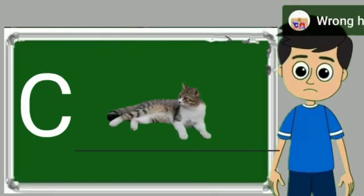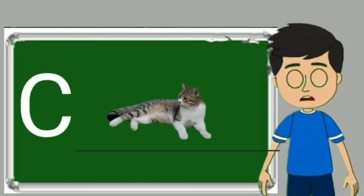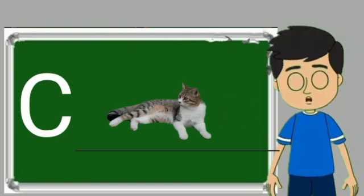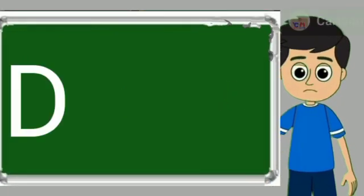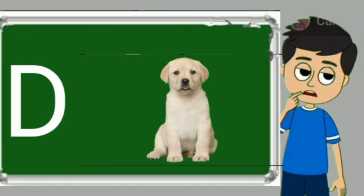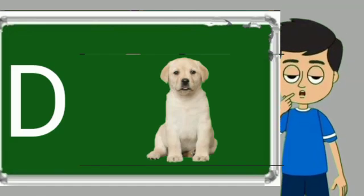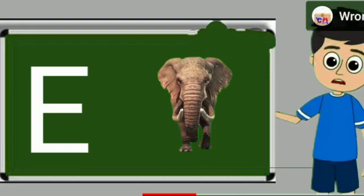C for cat. Cat means billy. D for dog. Dog means kutta.